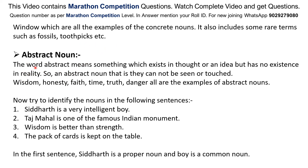Abstract Noun. The word abstract means something which exists in thought or an idea but has no existence in reality. An abstract noun cannot be seen or touched. Wisdom, Honesty, Faith, Time, Truth, Danger — all are examples of abstract nouns.